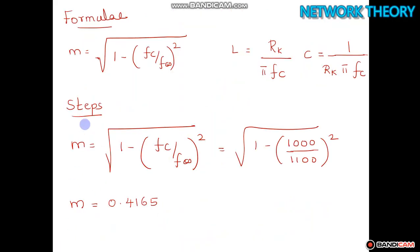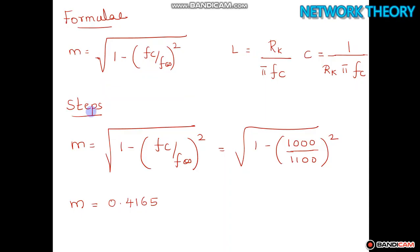The formula for m in an M-derived low-pass filter is: m = √(1 - (fc/f∞)²). For a low-pass filter, L = Rk / (π·fc) and C = 1 / (Rk·π·fc).